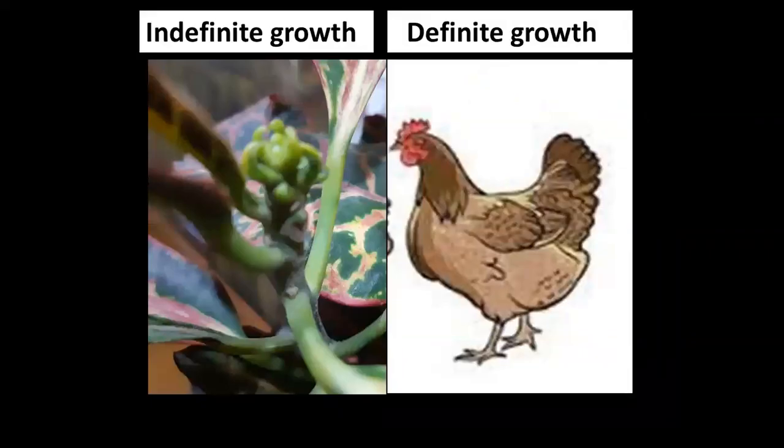Plants are having indefinite growth throughout their life. As you can see in this picture there is a new bunch of leaves. But on the other hand, in animals there is definite growth. After a certain period, the growth will stop in their body.